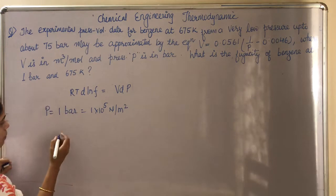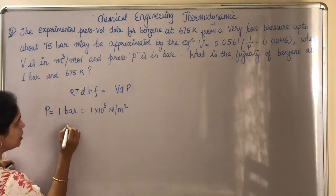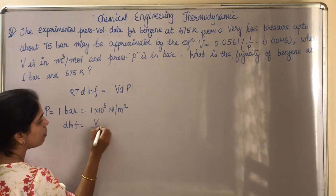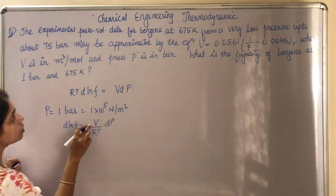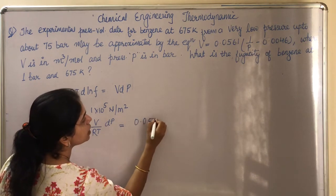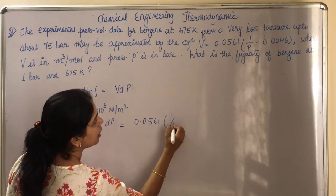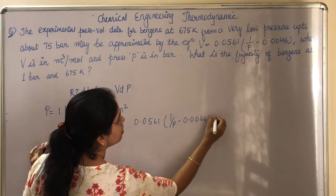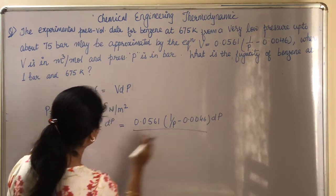So to solve this, first d ln f = V/RT dP. We know that the value of V is 0.0561(1/P - 0.0046) dP, and now we need to find out and substitute the value of RT.